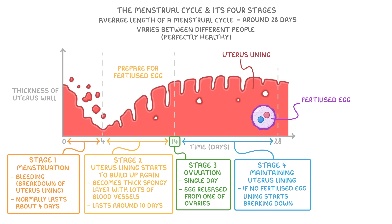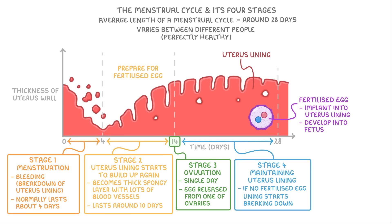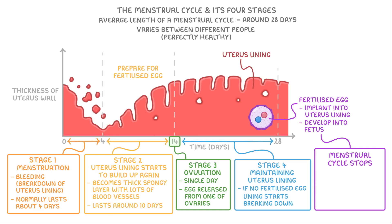However, if there was a fertilised egg, then it would implant into the uterus lining and slowly develop into a fetus. If this happens, the cycle doesn't go back to stage 1 again. The menstrual cycle actually stops because the woman is pregnant, so there would be no need for this cycle anymore.